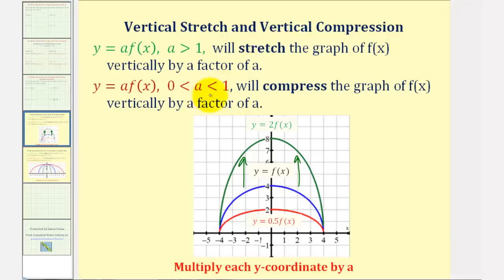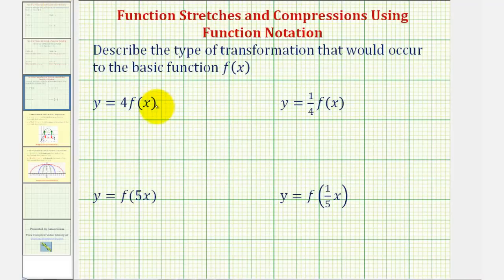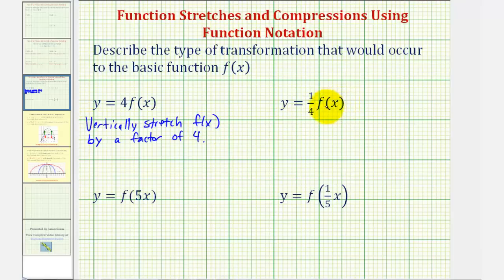If a is between zero and one — for example, if a is one-half or 0.5 — notice how the graph of y equals 0.5 times f of x is a vertical compression, because now the y-coordinates of the parent function are multiplied by one-half to find points on 0.5 times f of x. So we'd say this is vertically compressed by a factor of one-half. Going back to our examples: y equals four times f of x would vertically stretch f of x by a factor of four, and y equals one-fourth times f of x would vertically compress f of x by a factor of one-fourth.